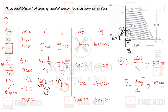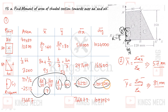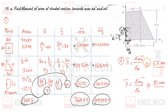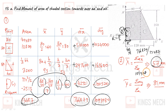For the circle centroid, the formula 4R/3π gives approximately 17 mm, and D/2 = 40 mm. After multiplying and combining the positive and negative values — subtracting the circle contribution — summation AX = 766,879 and summation AY = 1,093,080. Dividing by the total area of 13,487 mm² gives x̄ = 57 mm and ȳ = 81 mm.